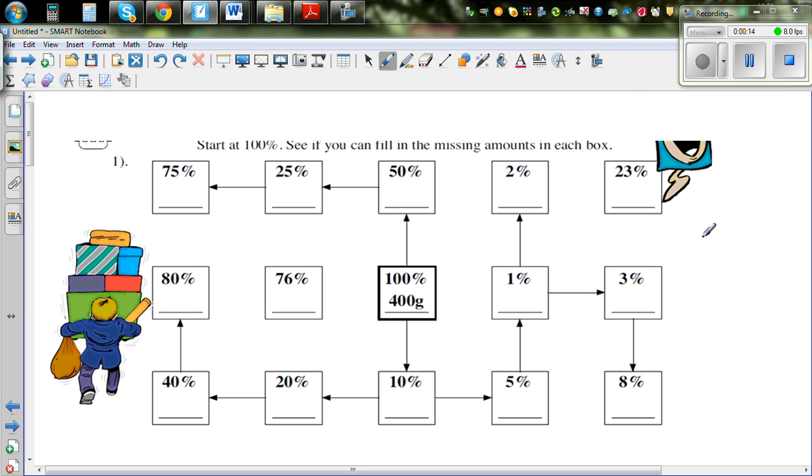This is 100%. So what we know is we are starting with 400 grams, given to be 100%. Using this information we need to fill all the other boxes. This is the core information that we have.